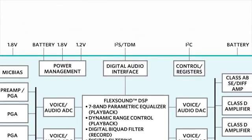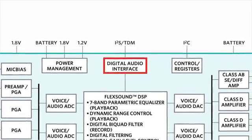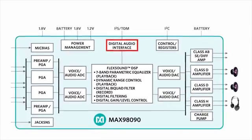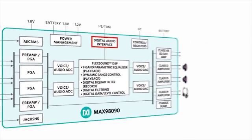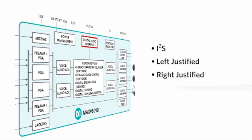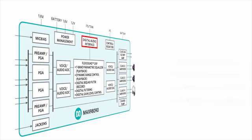The MAX 98090 can simultaneously transmit one stereo audio signal and receive one stereo audio signal in a wide range of formats, including I2S, left justified, right justified, and four-slot TDM. The audio interfaces support 8 kHz to 96 kHz sample rates.